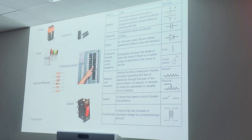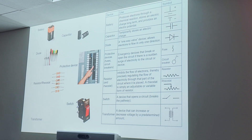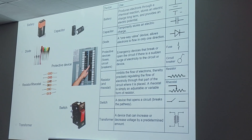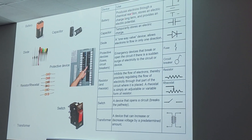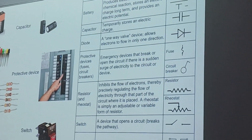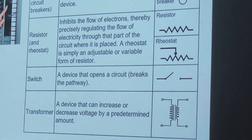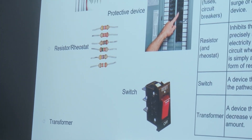Semiconductors are not used in our circuits because they're not very good at doing their job. So, there are some parts within a circuit. First of all, we have our battery. We need a battery because it is the source of where we get our energy from. Batteries produce electrons through a chemical reaction, store an electric charge long term, and provide our electric potential. Then we have something called a capacitor, and what it does is temporarily store an electric charge.